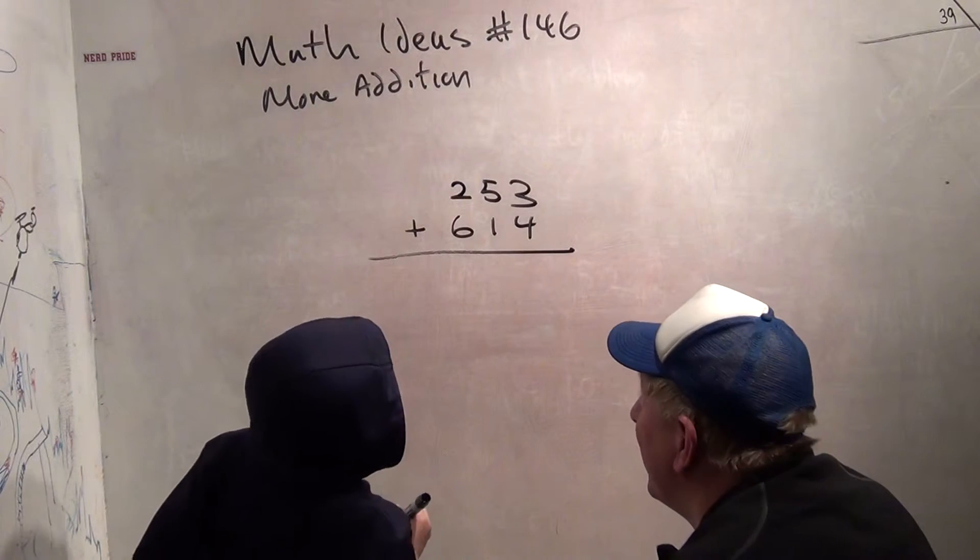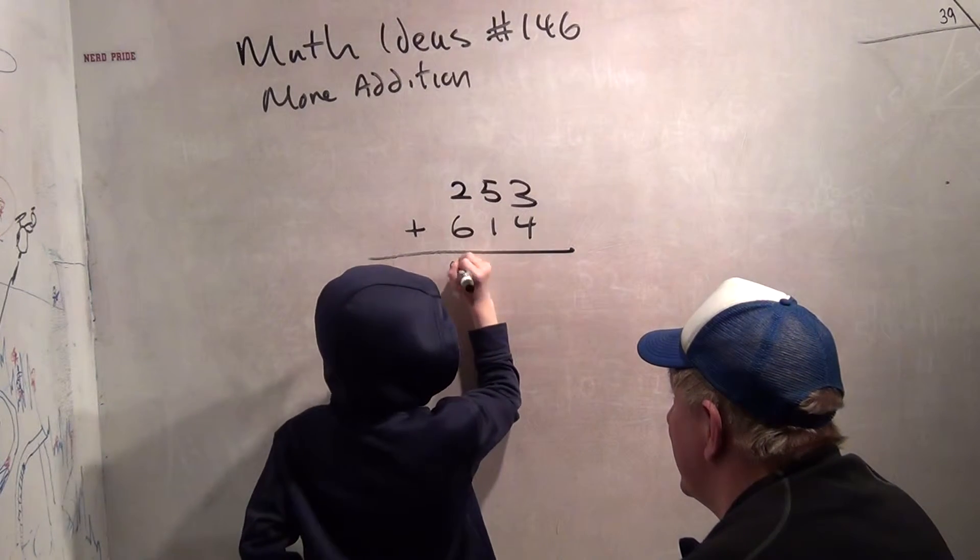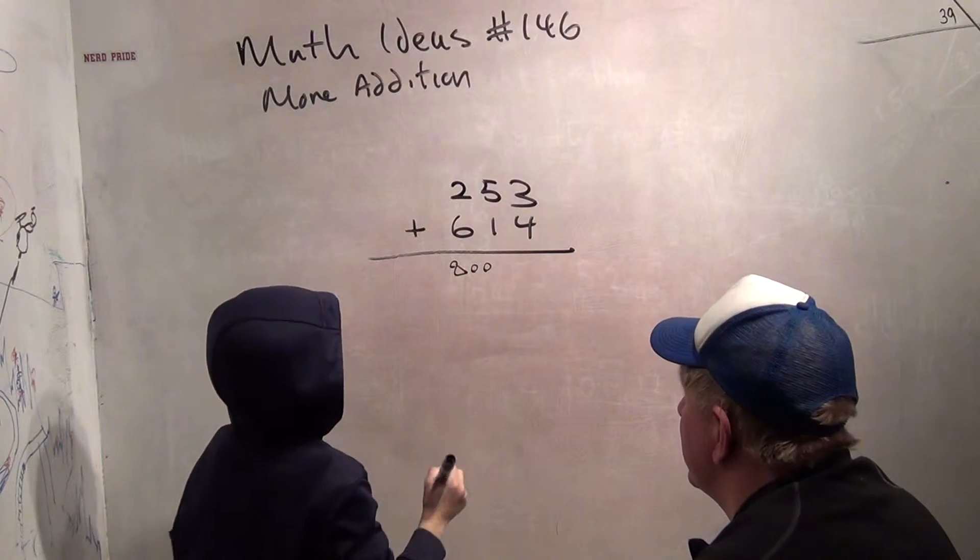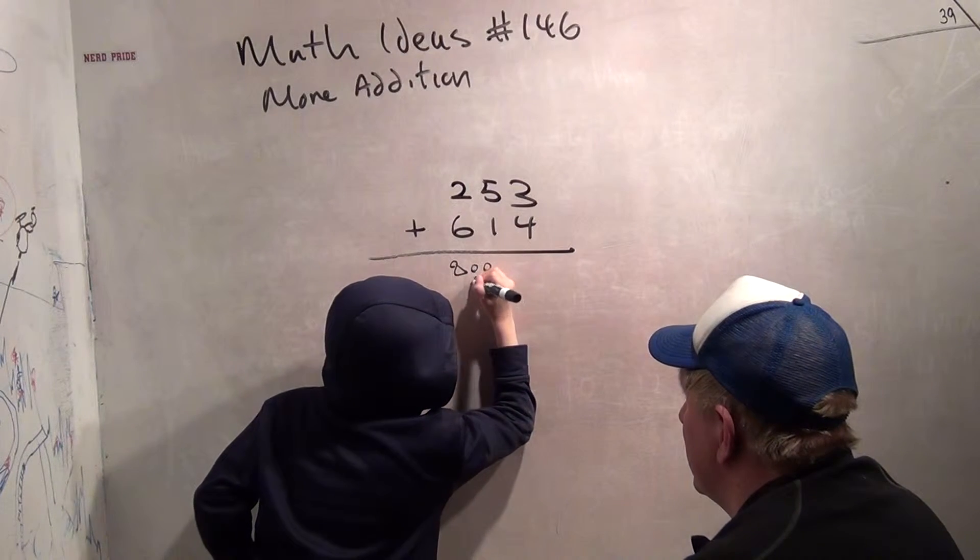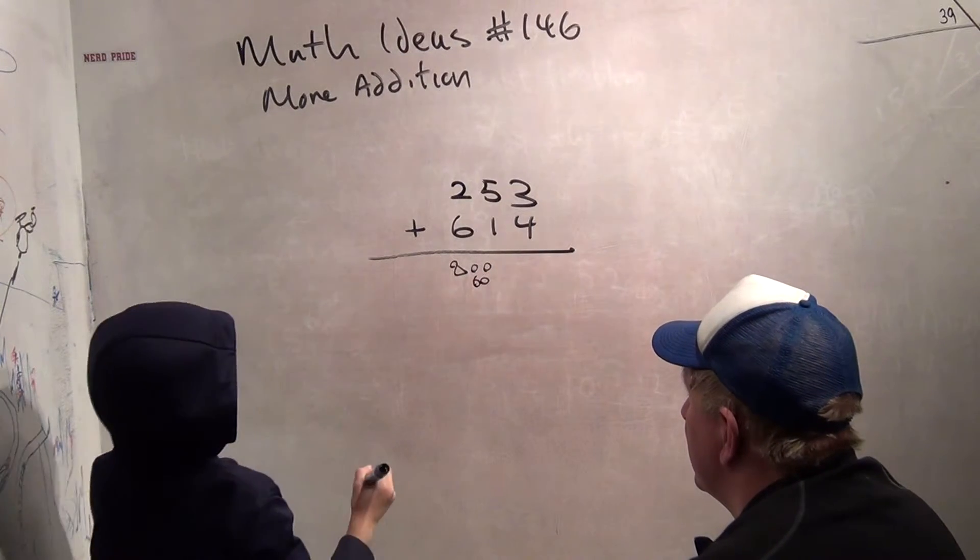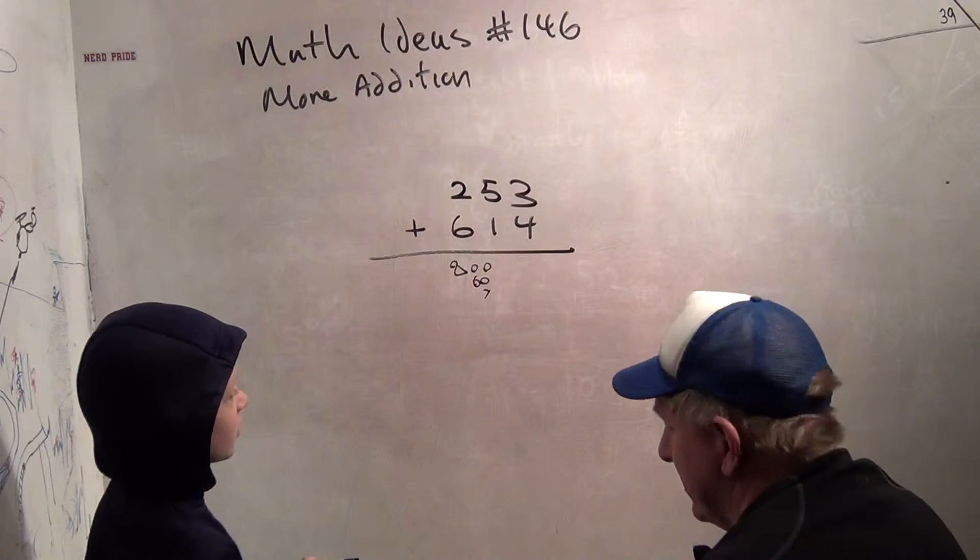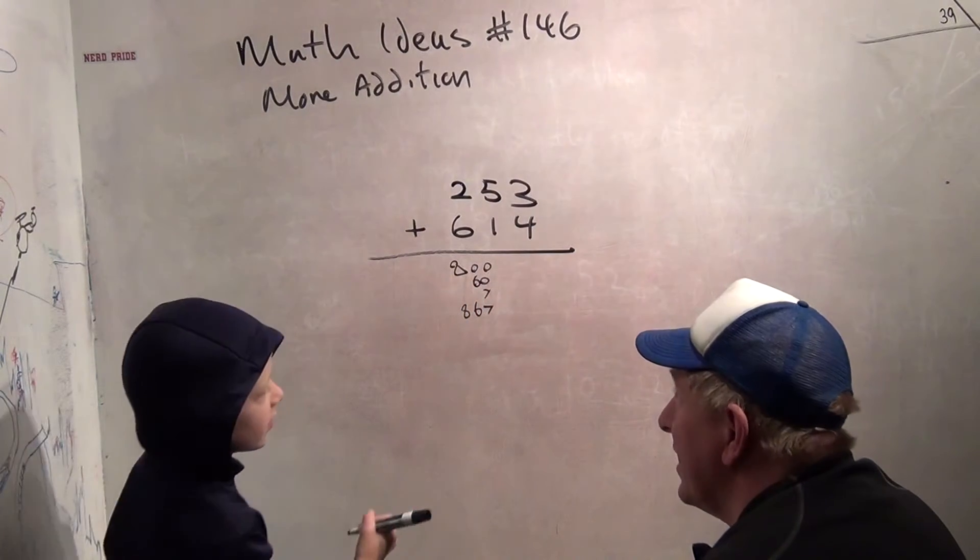200 plus 600 is 800. 50 plus 10 is 60, and so the plus 4 is 7. That's 867. Can I write that down? How about that?